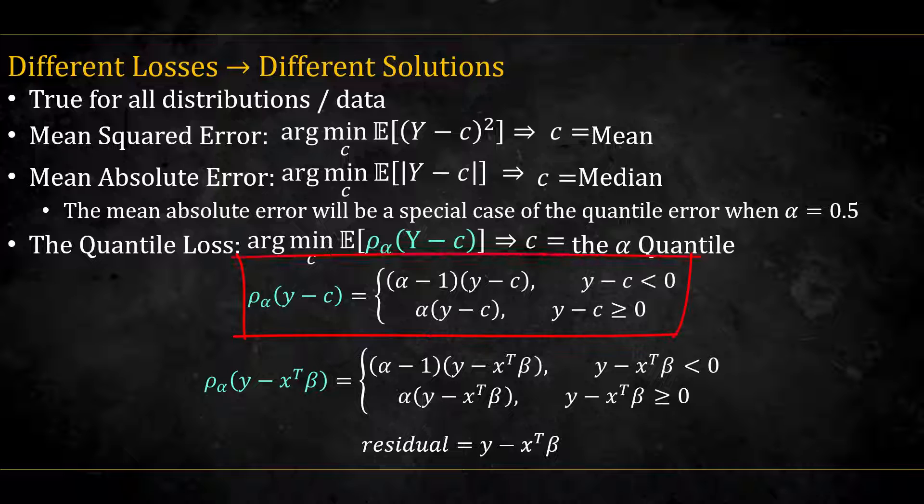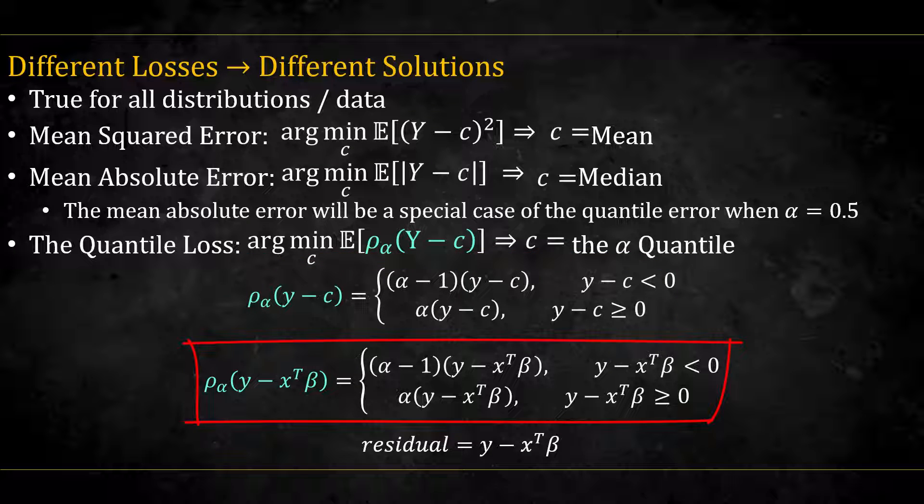Here I wrote down the quantile loss for the actual quantity we are looking at, which is the residual between the actual value and the output c. Since we constrain our output with a model, we replace c with the linear model, x transpose beta.